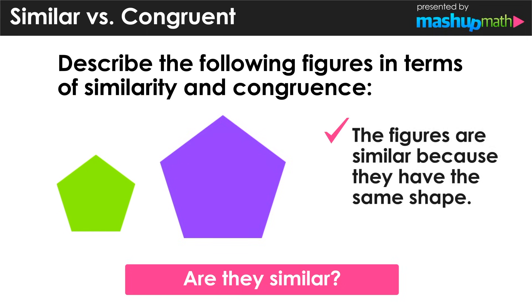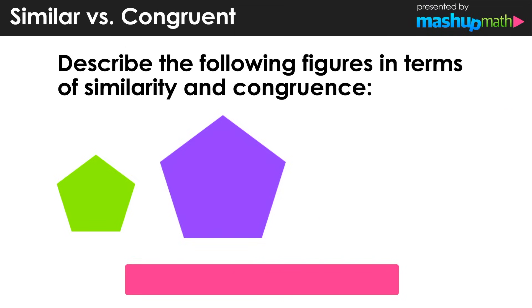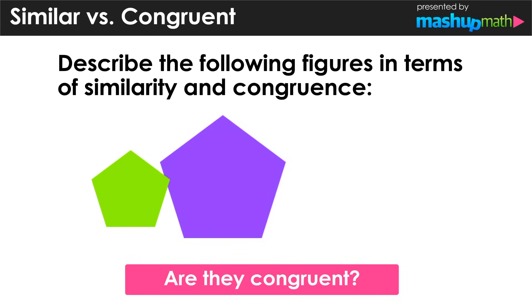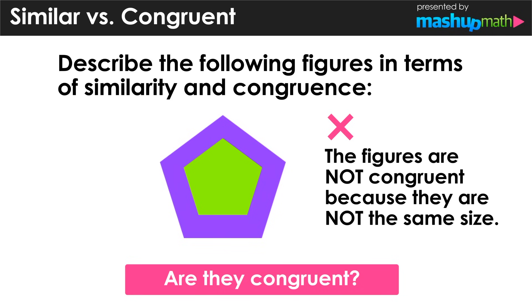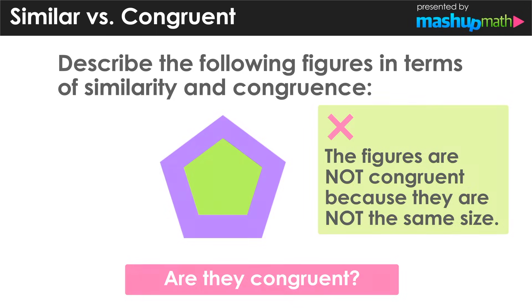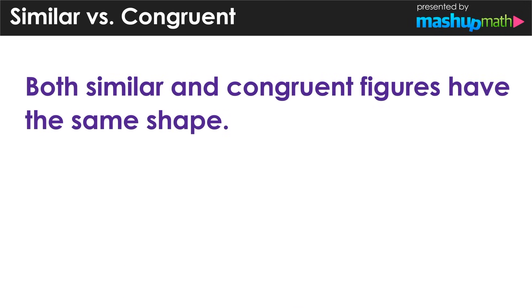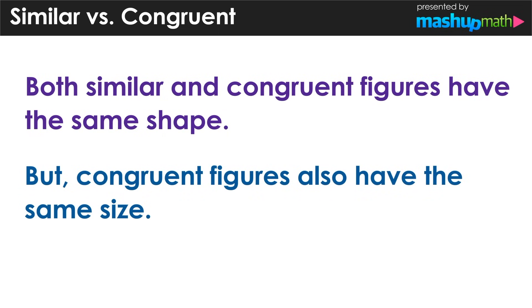We can conclude that the figures are similar because they have the same shape. However, these figures are clearly not the same size, so we can also conclude that they are not congruent. Both similar and congruent figures have the same shape, but congruent figures also have the same size.